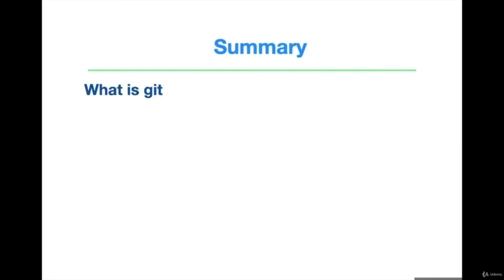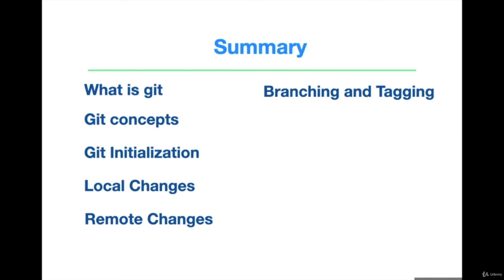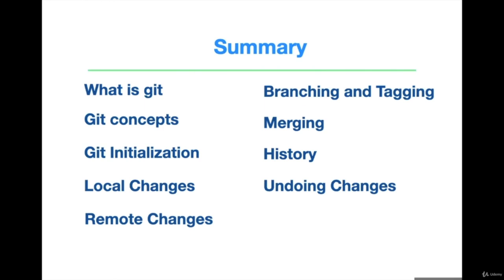This exercise covers all the topics we have discussed in this course. Let's summarize: we learned what Git is, different Git concepts, how to initialize Git using GitHub and the command line, how to do local and remote changes, branching and tagging, merging changes between branches, viewing the history of commits, and how to undo changes in a Git repository. That's all about this mini course on Git fundamentals. Hope you have enjoyed the course — a big thank you to all for completing it.